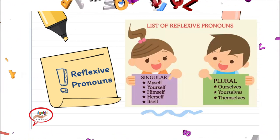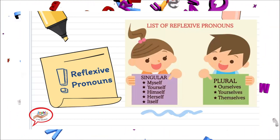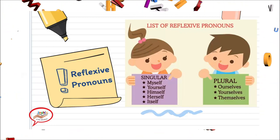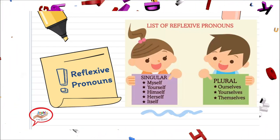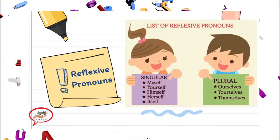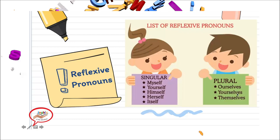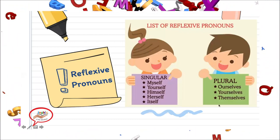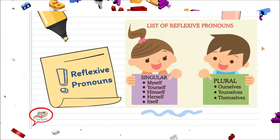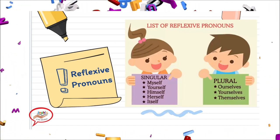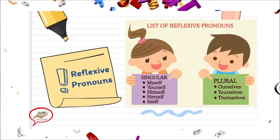El siguiente es yourselves. Yourselves se va a referir a cuando nosotros utilizamos nuestro pronombre you, pero en plural. Luego tenemos themselves. Themselves lo vamos a utilizar cuando queramos usar el pronombre they.